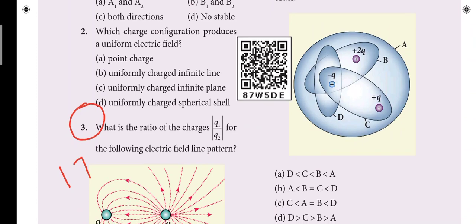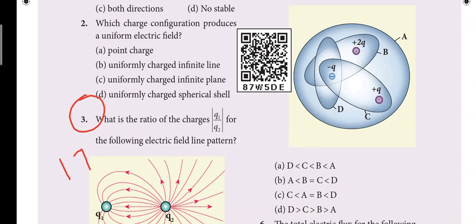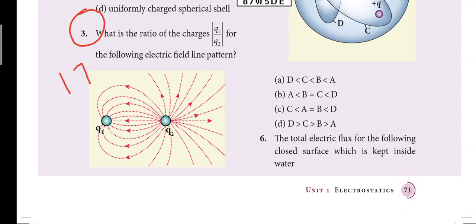Third one word, what is the ratio of the charges Q1 by Q2 for the following electric field line pattern. So on the 17th page, the one word is reduced to one word. So that's the only one word reduced in the first lesson.